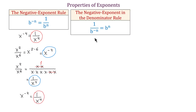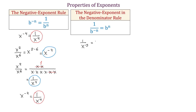Next is the negative exponent in the denominator rule: 1 over b to the negative n equals b to the positive n. So if we have a negative exponent in the denominator, we move this expression to the numerator and the exponent becomes positive. For example, 1 over x to the negative fifth power equals x to the positive fifth power.